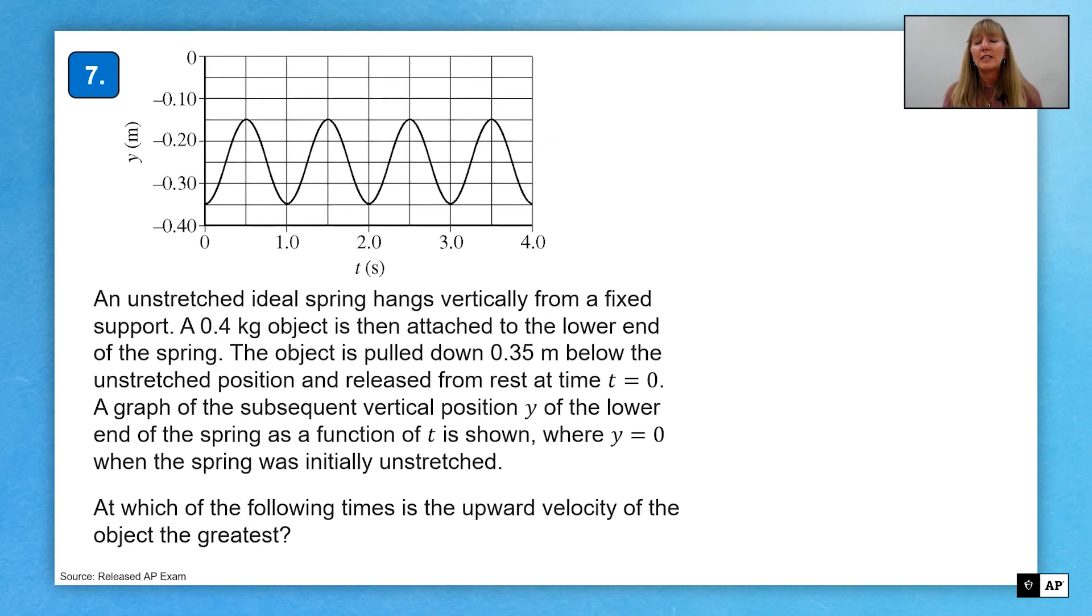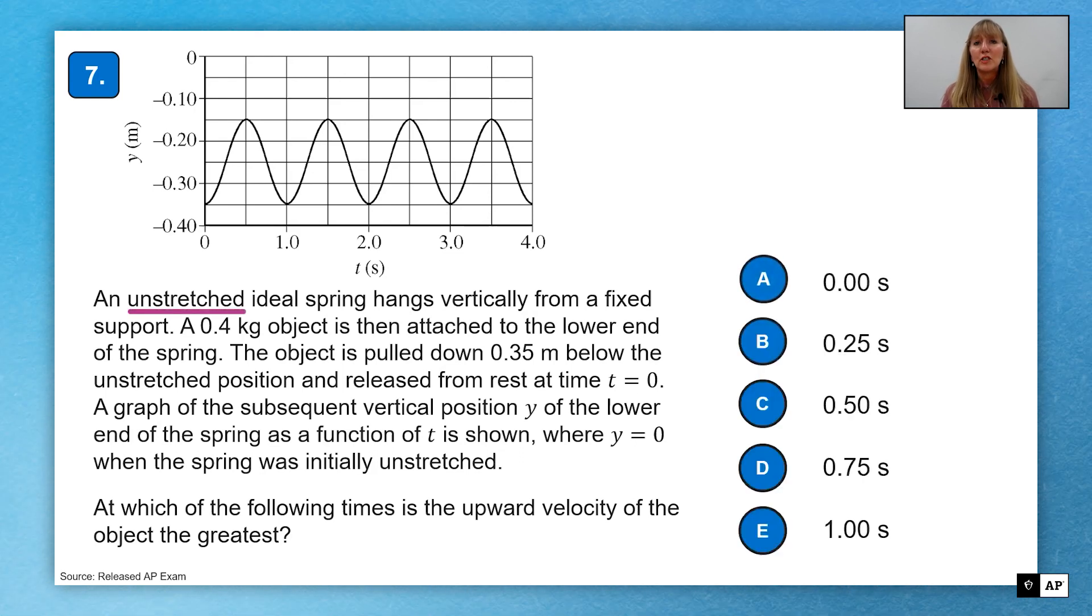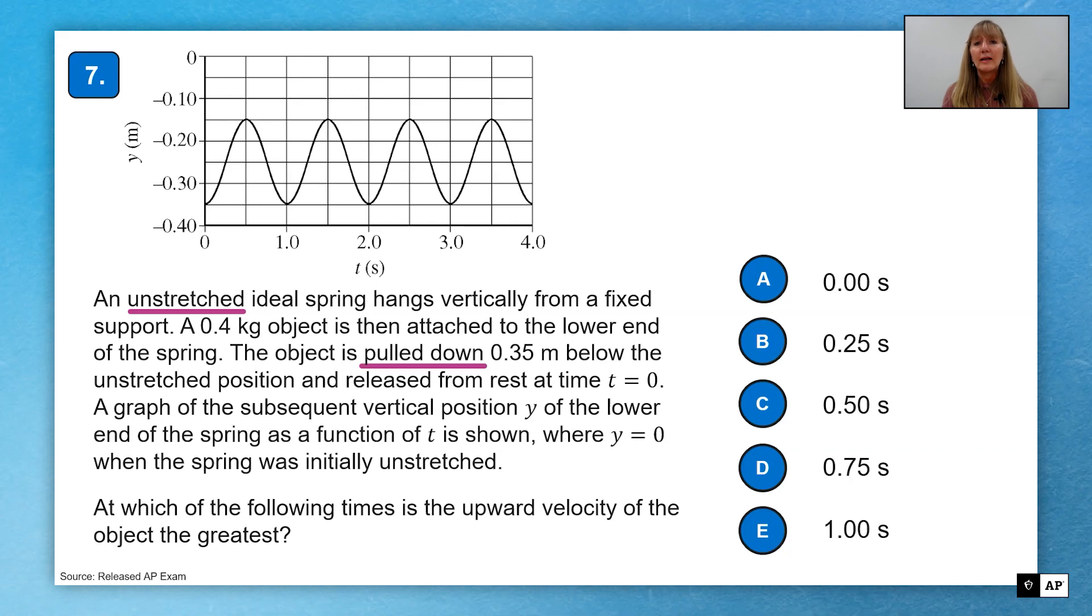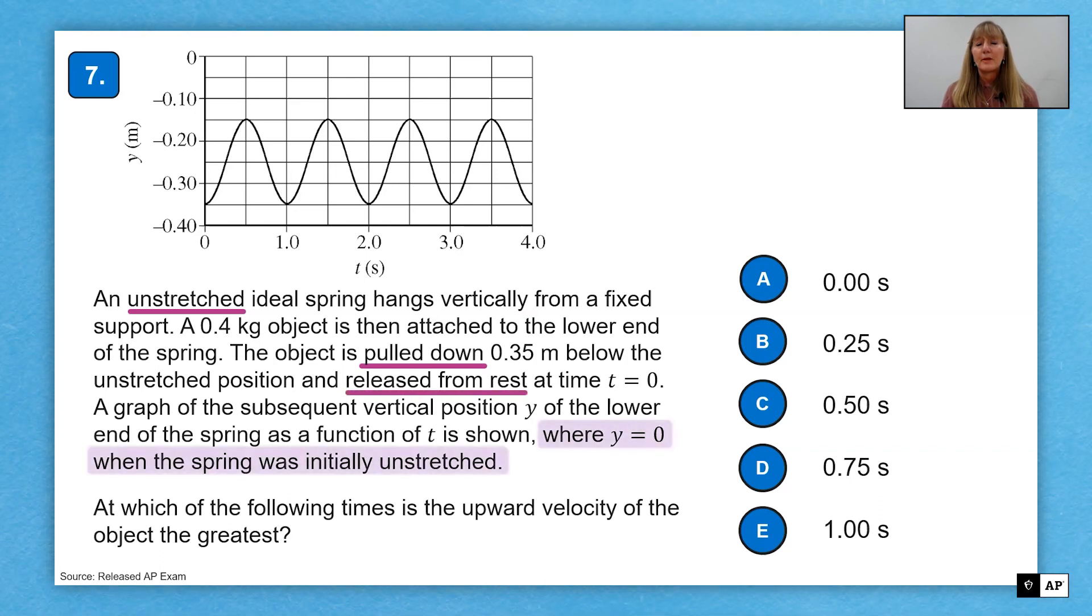All right, let's switch it up from gravitation to simple harmonic motion. In this situation, I have both a graphic and a stem paragraph that's going to talk about a situation and then multiple questions asked about that same situation. So here we go. We have an unstretched ideal spring hanging vertically from a fixed support. There is a 0.4 kilogram object attached to the lower end of the spring. The object is pulled down 0.35 meters below the unstretched position and released from rest at time t equals zero. Therefore, at the graph, you can see that the spring is already stretched as soon as we start collecting data. The graph shows the vertical position of the lower end of the spring as a function of time t, where y equals zero when the spring was initially unstretched.